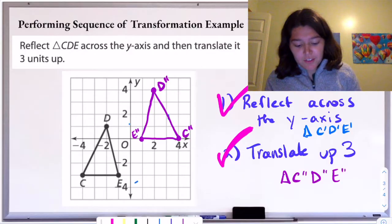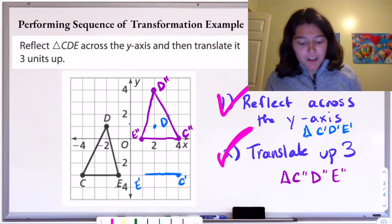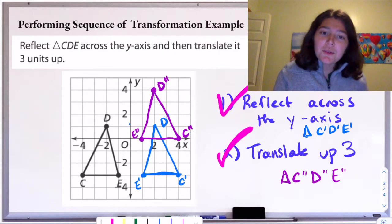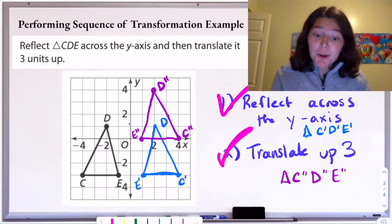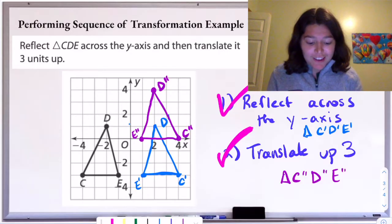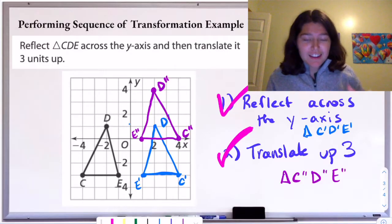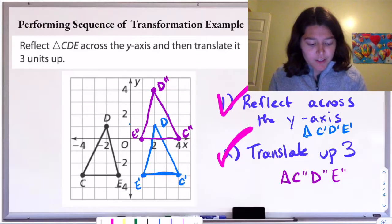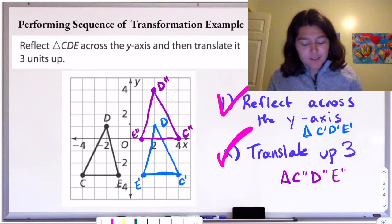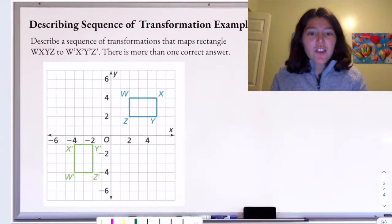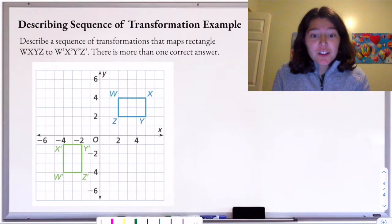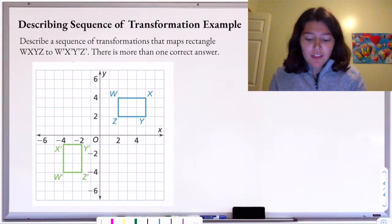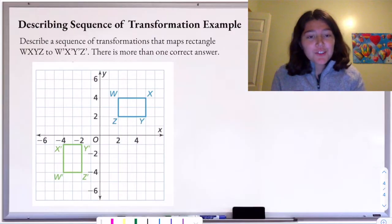Either way, it's showing our work — but either way we need to make sure we have our purple one, which is the reflected and then translated shape. So that was performing a transformation; then you're going to have to figure out how we can describe one.